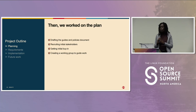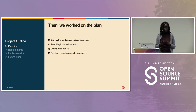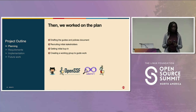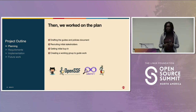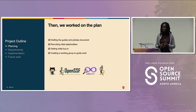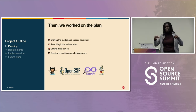The project outline started with drafting guides and policy documents, looking at industry best practices. We recruited initial stakeholders from F5's open source ambassador program — people excited about GitHub and open source who helped with the initial plan and provided buy-in, representing various open source entities across our acquired companies. We also set up a working group to guide implementation.